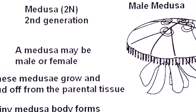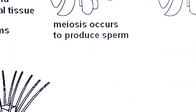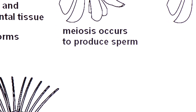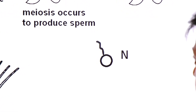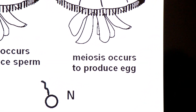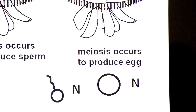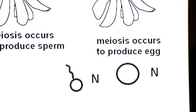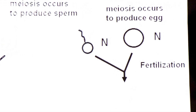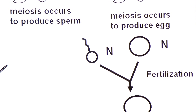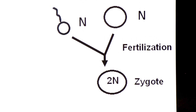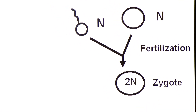Now gametic meiosis occurs. In the body of the male medusa, meiosis takes place to produce sperms — that is why the sperm is haploid. In the body of the female medusa, meiosis takes place to produce eggs — eggs are also haploid. The sperm and egg are released into the water for fertilization. The sperm and egg fuse to form a zygote — this process is called fertilization. This is external fertilization taking place in water, and the zygote is diploid.